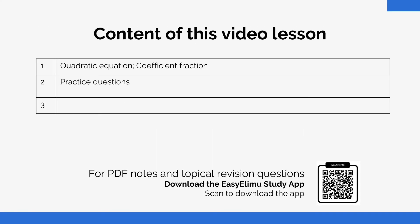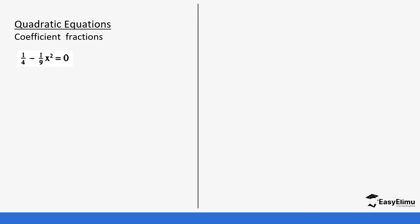In the previous lesson we solved quadratic equations where the equations had whole numbers — there were no fractions. For this lesson we are going to be solving a quadratic equation by factorizing and solving for the value of x, but now our equation is made up of fractions. The first thing to do when we get such a question is to change the fractions into whole numbers, and you can do this by getting the LCM of the denominators.